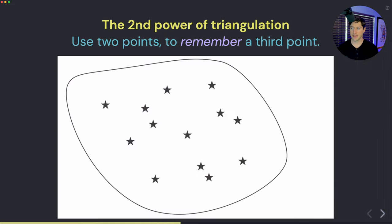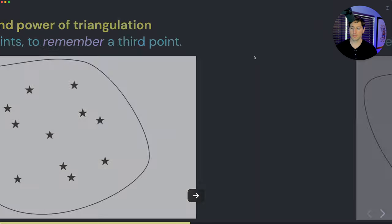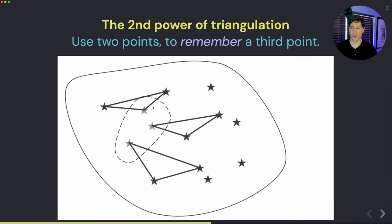Let's go into the second power. The second power of triangulation is to use two points to remember a third point. Before I show you what that looks like on the next graphic—this graphic isn't from me. This is actually from a little known lecture by someone called Richard Feynman, and he is using this graphic to show that we can use two points to remember a third point.